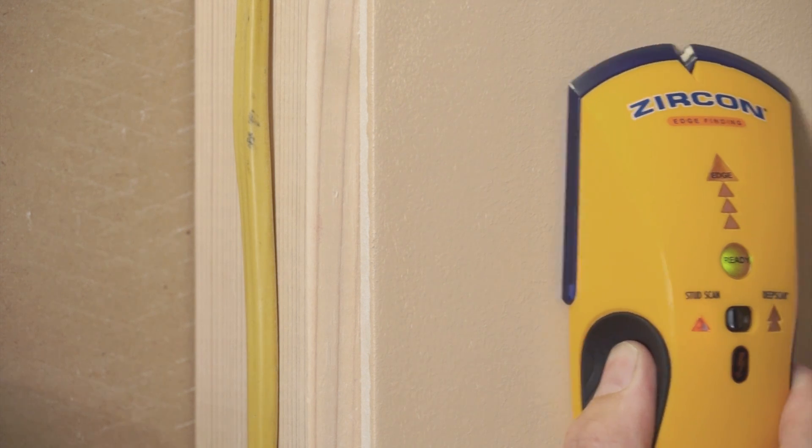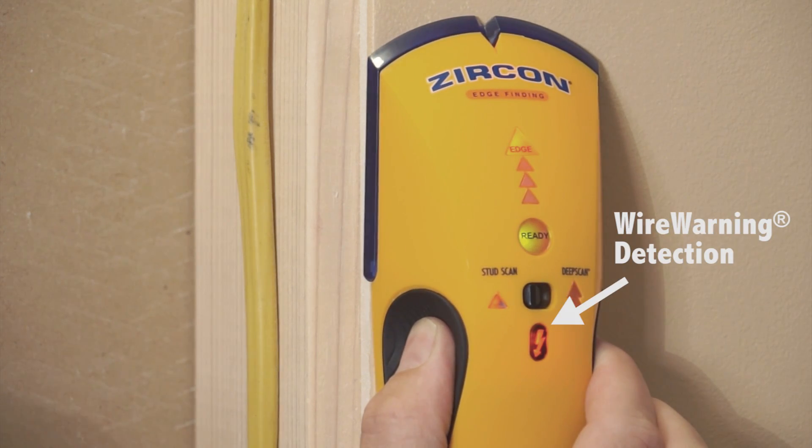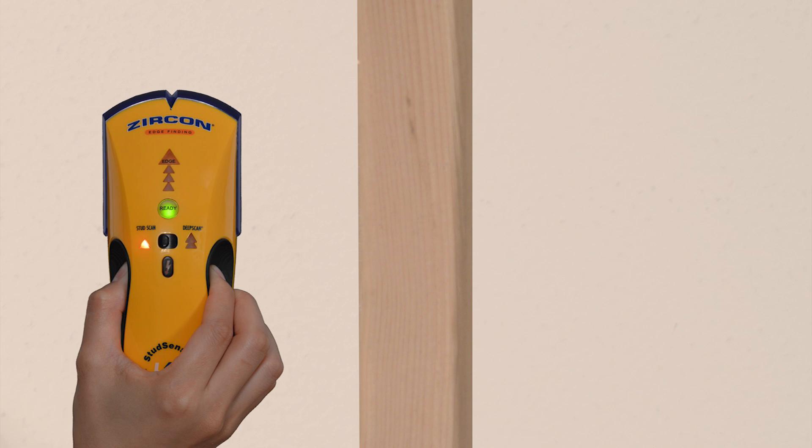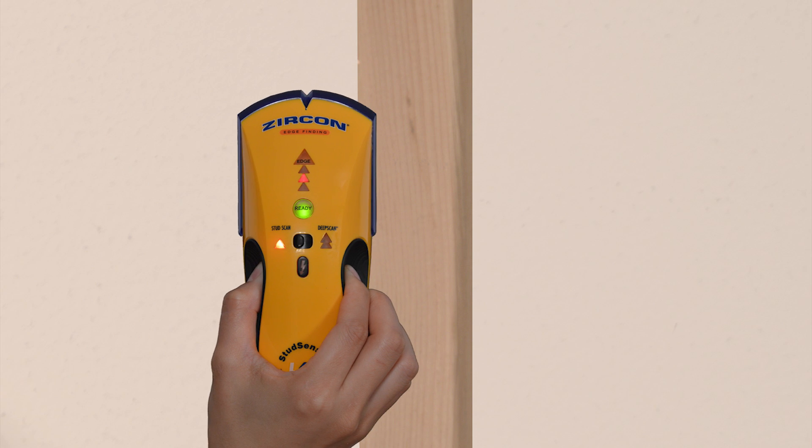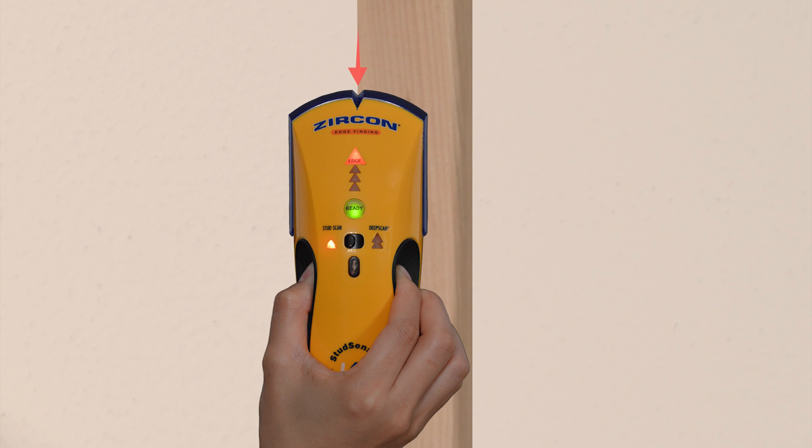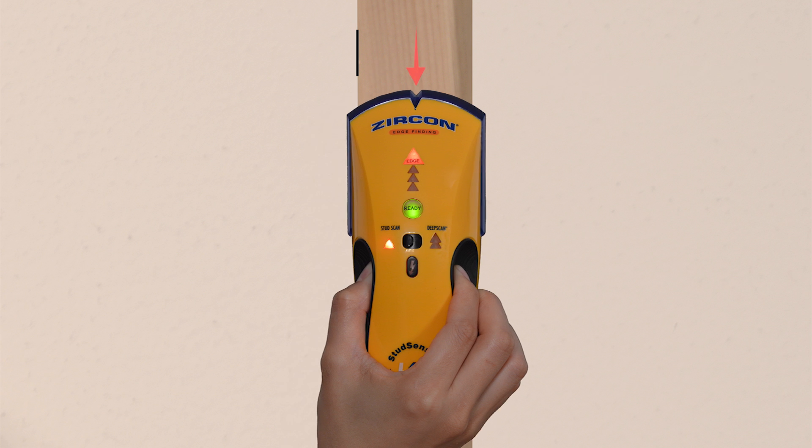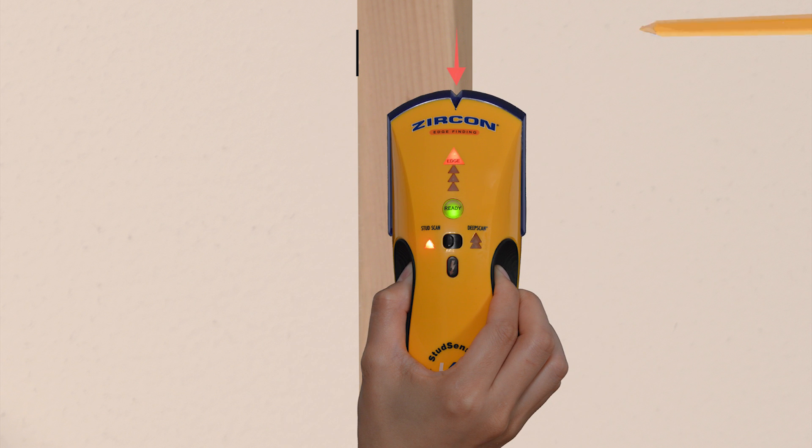The tool also features wire warning detection, alerting you to the presence of live AC wiring. Just slide the tool across the wall. The arrows light up as you near a stud, and the top edge light and spotlight pointer shine when you've found the edge. It finds both edges so you can find the center.